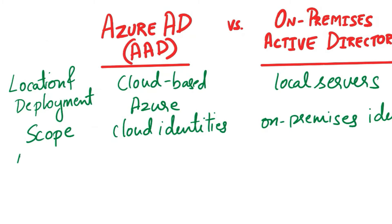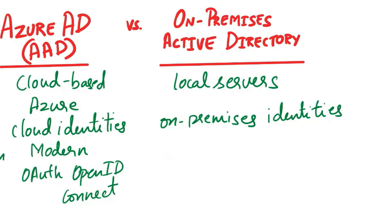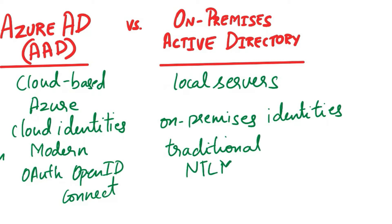The next aspect of comparison is authentication. Azure AD supports modern authentication protocols like OAuth and OpenID Connect. On-premises Active Directory uses traditional authentication protocols like NTLM and Kerberos.